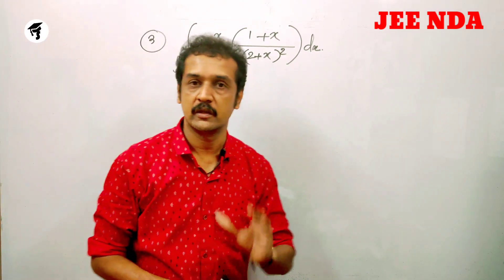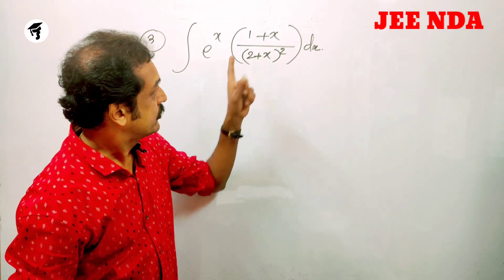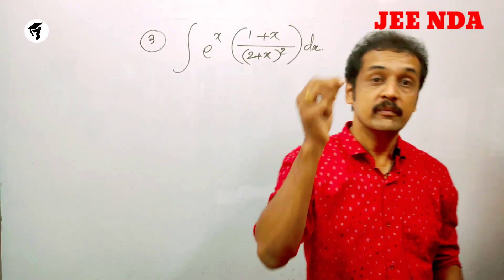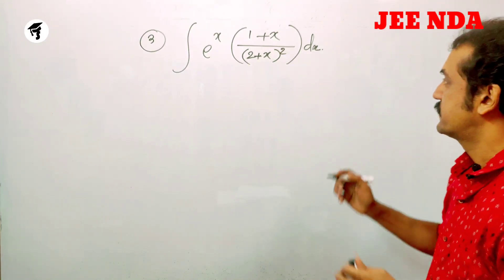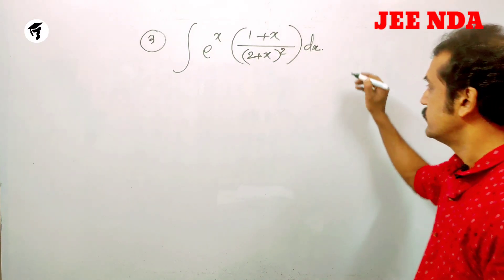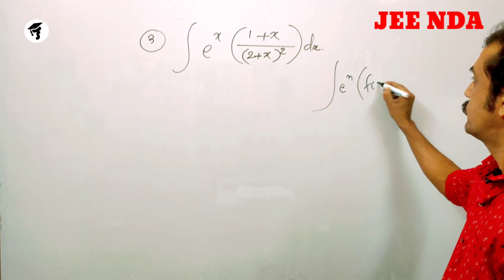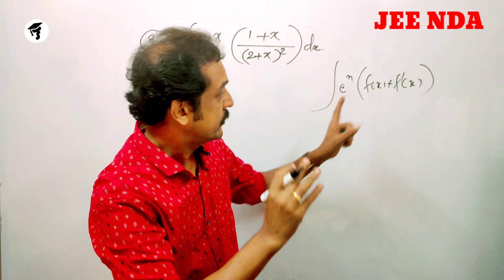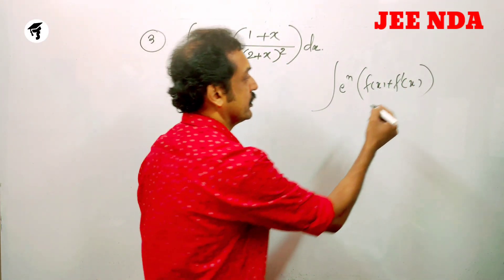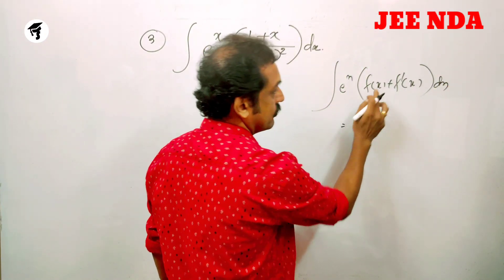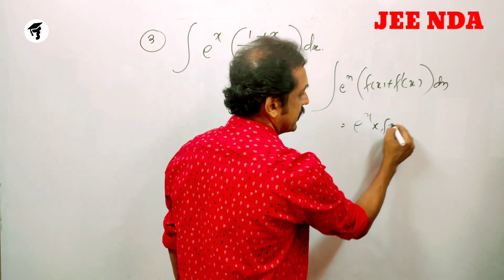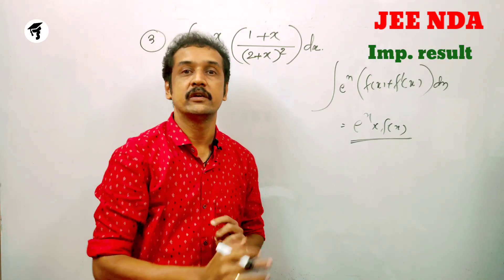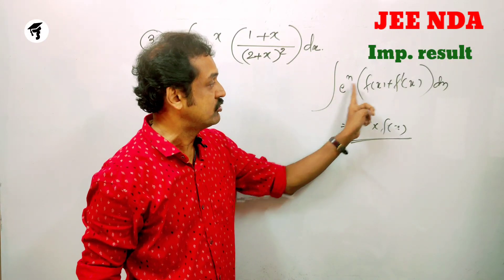The next question is: integral of e^x · (1+x)/(2+x)² dx. This is a standard form. We use the result: integral of e^x [f(x) + f'(x)] dx = e^x · f(x) + C. We need to identify f(x) and f'(x) from the integrand.